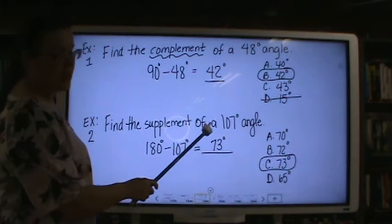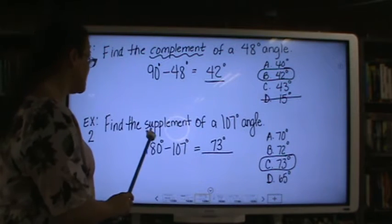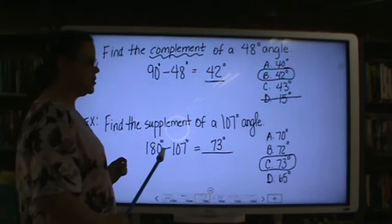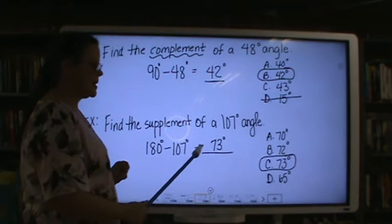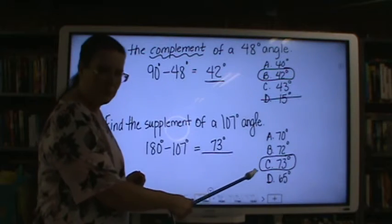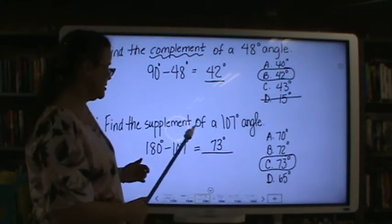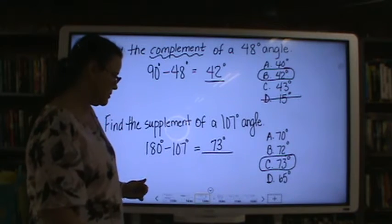Find the supplement of a 107 degree angle. The supplement of an angle is 180, so you would take 180 and minus 107, and that would equal 73. They would have something that would be similar and then something out of the ordinary. Use process of elimination and do your math right, you get 73 degrees.